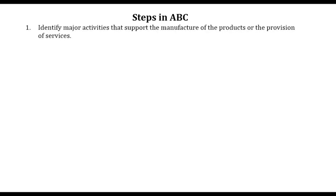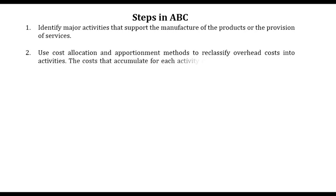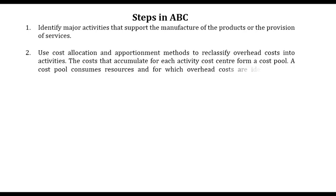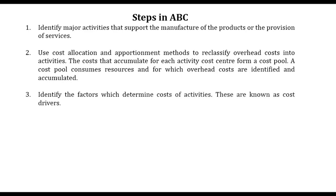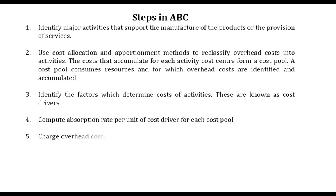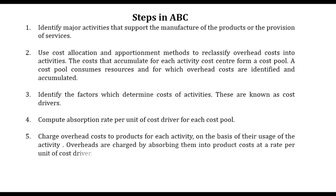Steps in ABC: all we compute here is an overhead absorption rate. First, you determine activities. After determining activities, you allocate and apportion costs into activities — initially you'll have overhead items like rent or depreciation of a building. After having activities with their costs, you identify factors that determine the cost of such activities, known as cost drivers. Then compute an absorption rate per unit of cost driver for each cost pool or activity. After having the overhead absorption rate, charge overheads to products or services using each activity.